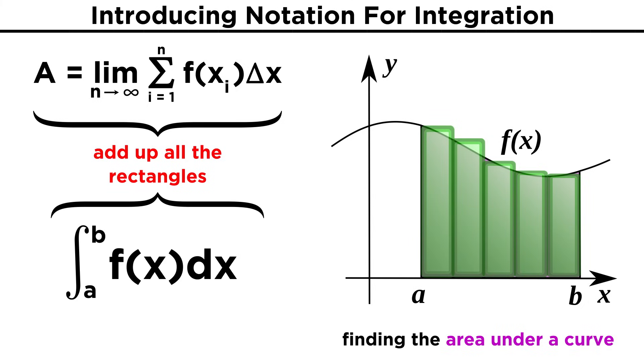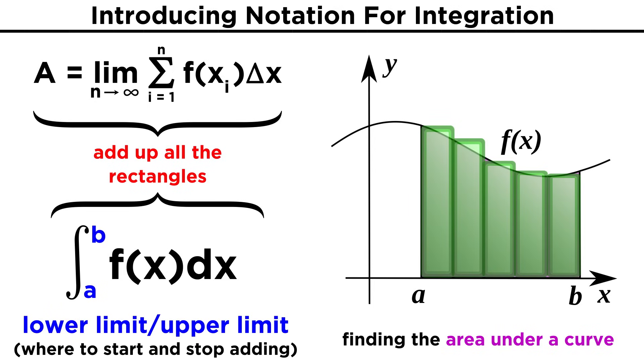The new way that we will represent this idea looks like this. This weird symbol, introduced by Leibniz, is called an integral sign, and it looks kind of like a long s, because it represents a limit of sums. The function being integrated, f of x, is the integrand, and these two numbers by the integral sign are called the limits of integration. A is the lower limit, and B is the upper limit.